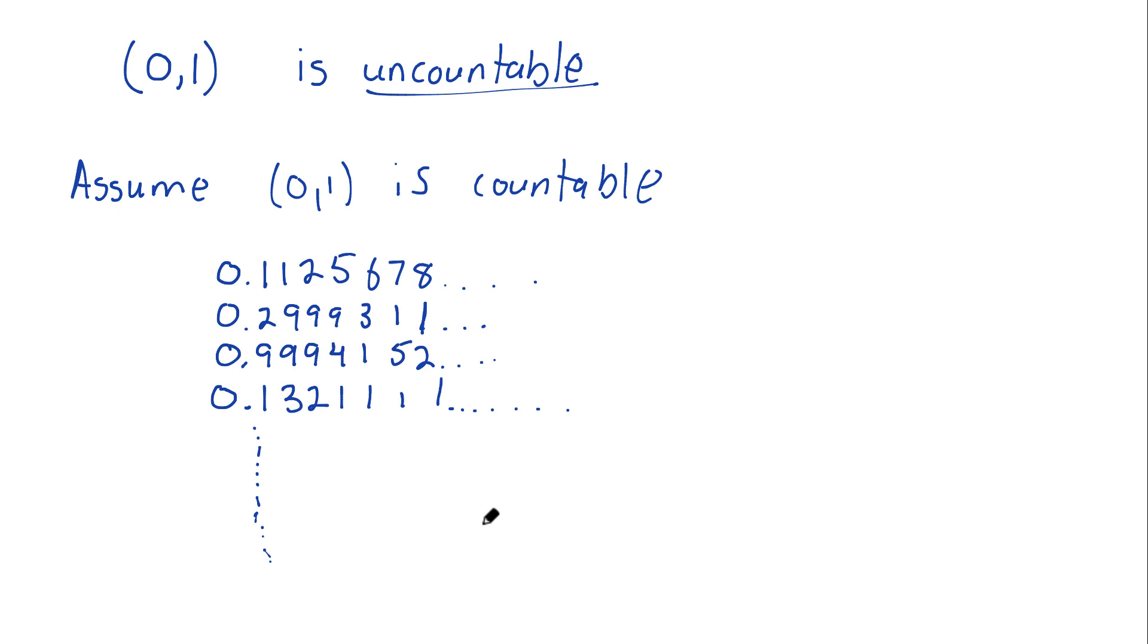Here's the contradiction. Let's create a number here. Now I'm looking at this first number. The first number goes 0.1. So the number I'm going to create would start 0.2. Let's look at the next number in my list. And let's look at the nine.